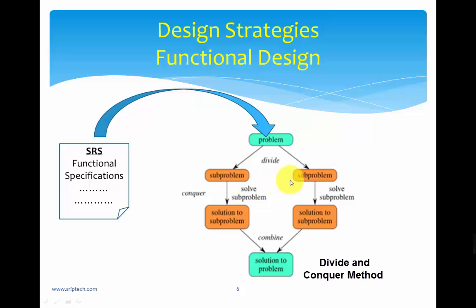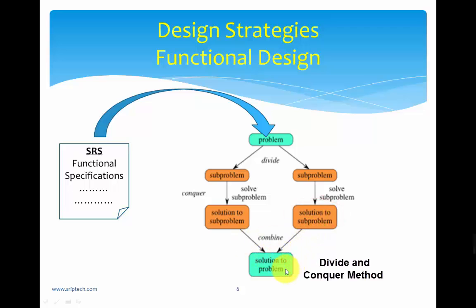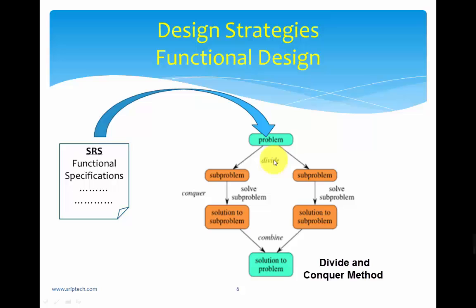We tackle individual sub-problems, because tackling a sub-problem is much easier than tackling the entire problem. We divide it into solvable components. We arrive at solutions to each sub-problem, combine those solutions, and thereby arrive at a solution to the main problem. This is similar to how the British conquered India — they divided India into small territories, conquered those territories one by one, and eventually conquered the entire country. This is the divide and conquer method used predominantly in functional design.